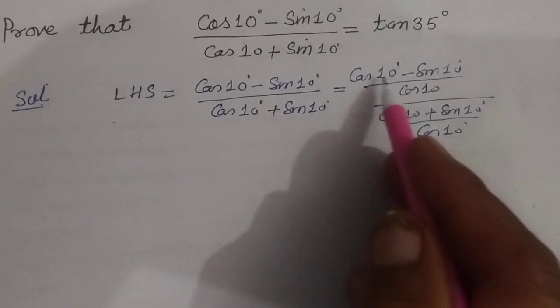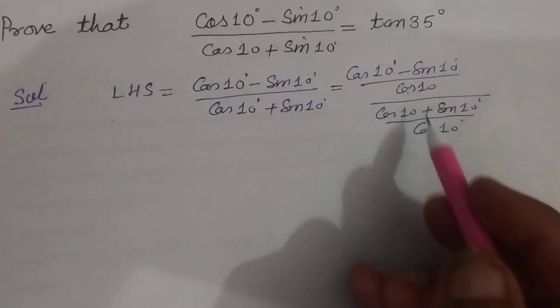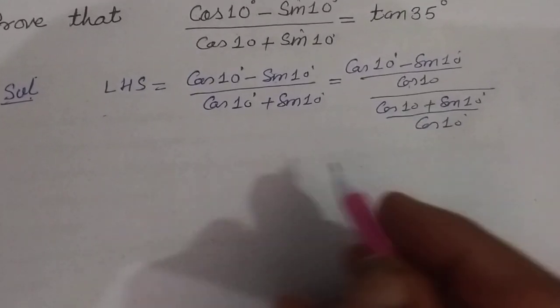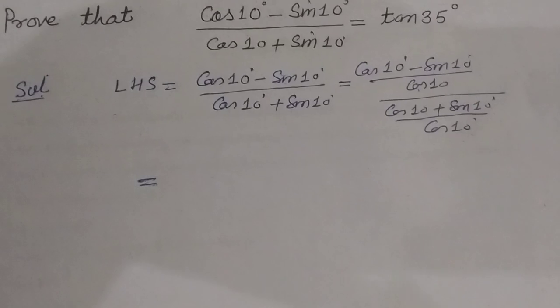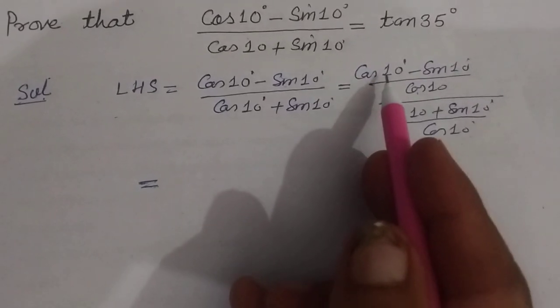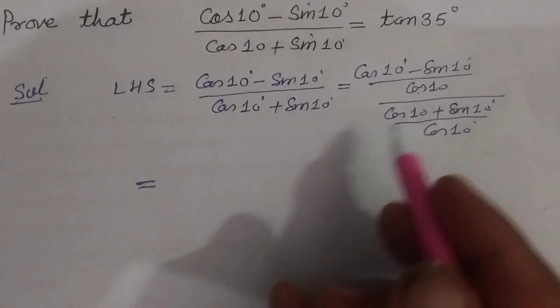So we divide the numerator by cos 10 and also denominator by cos 10. Now we divide the terms of numerator and denominator individually.